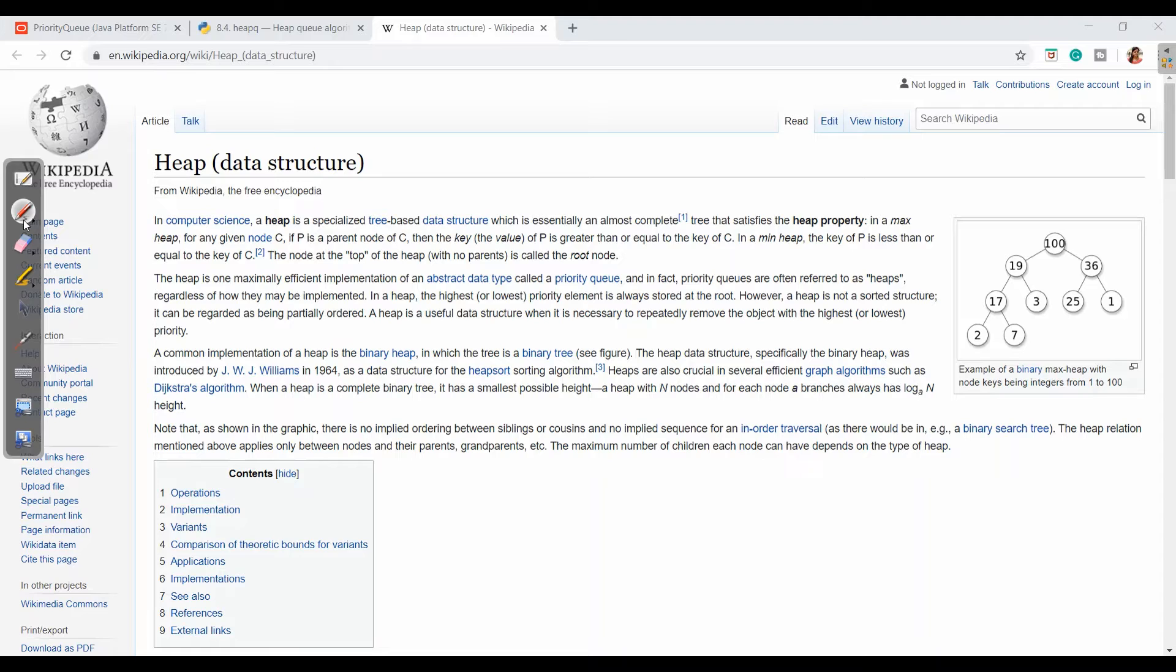If we come across Wikipedia, we find introduction as in computer science, a heap is a specialized tree based data structure, which is essentially an almost complete tree that satisfies heap property. In a max heap for a given node C, C stands for child. If P is a parent node of C, then the key of P is always greater than or equal to key of C. And then in min heap, the key of parent is less than or equal to the key of C. So this is a brief point of max heap, min heap.